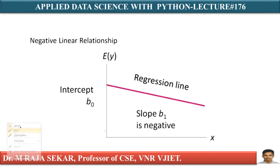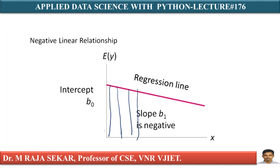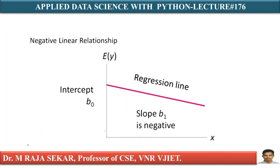Whereas this one is an example of a negative relationship. When x increases, the height is decreasing. As we move forward, the height is decreasing, meaning when x increases, the expected value of y is decreasing. So the slope is negative, and therefore this relationship is a negative relationship.